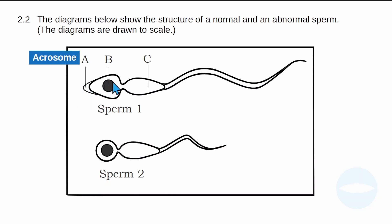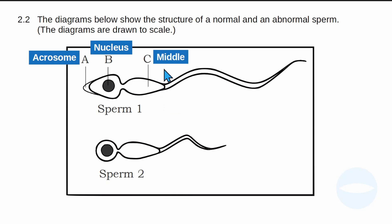Part B is the nucleus — the part that contains genetic material. The nucleus contains 22 autosomes and one sex chromosome, which is either an X chromosome or a Y chromosome, giving 23 chromosomes in total. Part C is the middle part, which is filled with mitochondria. That is where energy is produced, and this energy is used for the sperm to move.